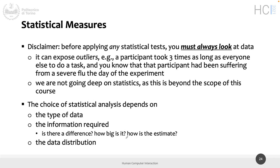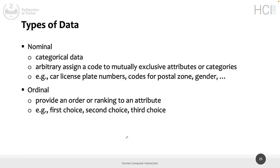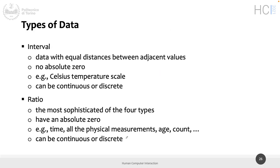Once you have cleaned data, you have to choose a statistical test. The choice depends on three things: the type of data you have — categorical, numerical, continuous — since some tests work for some kinds of data and others for others; the information you require — do you want to know if there is a difference, or how big the difference is; and the data distribution. We have four types of data.